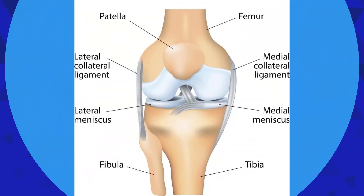Inside the knee joint, you have a meniscus on each side — one on the inside called the medial meniscus and one on the outside called the lateral meniscus. In between the femur, in what's called the notch of the femur, attaching between the tibia and the femur, is the ACL and the PCL. Those ligaments provide front-to-back stability of the knee joint. Side-to-side stability is created by the medial collateral ligament on the inside and the lateral collateral ligament on the outside.